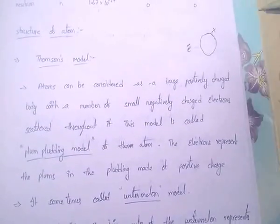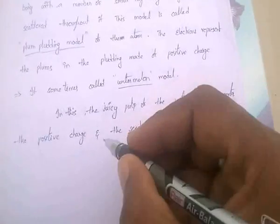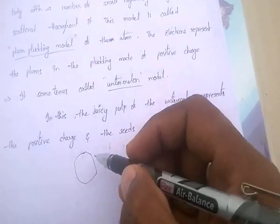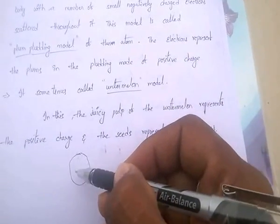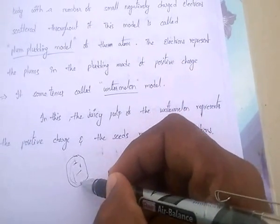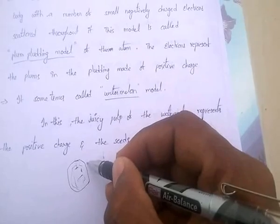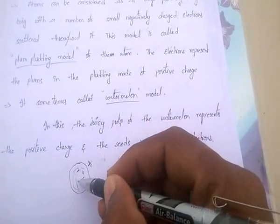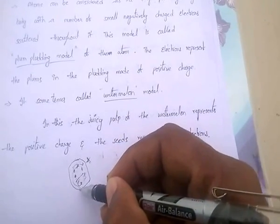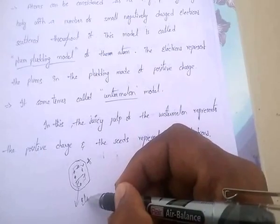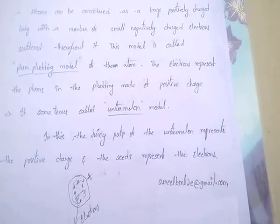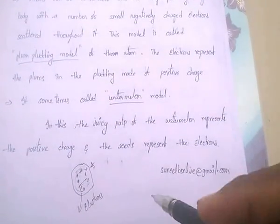This model is also called the watermelon model. In a watermelon, all the juice and pulp represent the positively charged body, and the seeds represent the electrons — the negatively charged particles. So the total pulp is the positively charged body and the seeds represent electrons.